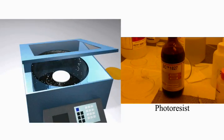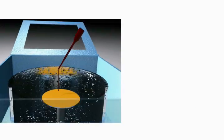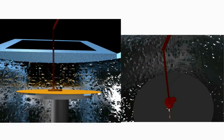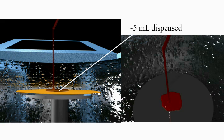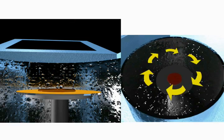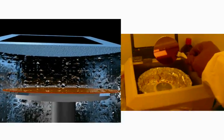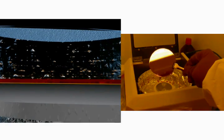Spin coating is a process used to apply highly precise thicknesses of chemical compounds, such as photoresist, to the surface of a substrate. A small puddle of photoresist is first deposited onto the center of the wafer, and then the wafer is spun at extreme high speeds, typically around 3,000 RPM. Centripetal acceleration will cause most of the photoresist to spread to, and eventually off, the edge of the substrate, leaving an extremely thin film of photoresist on the surface.